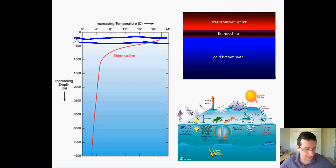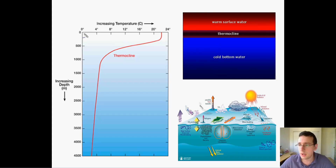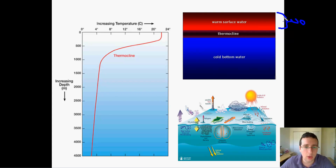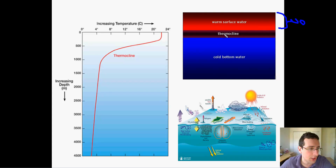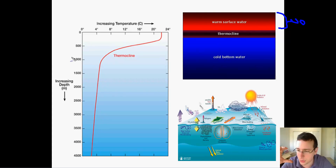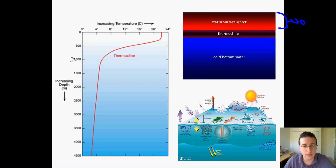As soon as you pass the photic zone — which is like the first 200 meters of water — after those first 200 meters, the sunlight will start becoming rarer and rarer as you go deeper and deeper. And so the water suddenly, between 500 and 1,000 meters, drops in temperature. The thermocline is this area of the ocean where the temperatures suddenly drop as the sunlight becomes rarer and rarer and it's no longer warming the water too much.